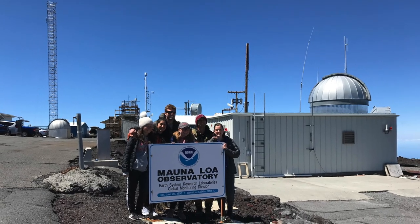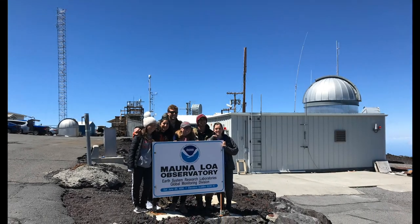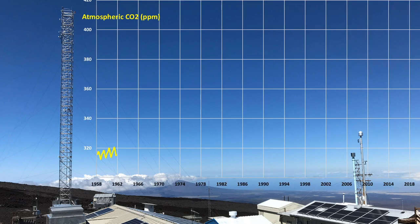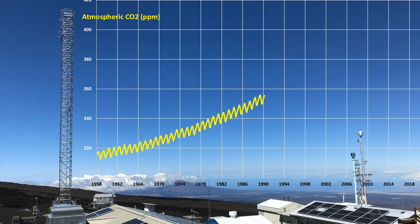Measurements of atmospheric carbon dioxide were begun in 1958, and those measurements continue today. The CO2 sensor is located up on the top of this instrument tower. Here are the measurements of atmospheric carbon dioxide from 1958 to 2018. When I look at these data, two things stand out. The first is the sawtooth pattern — the increase and decrease that happens every year. The second pattern is the overall increase from about 315 parts per million in 1958 to 415 parts per million today.